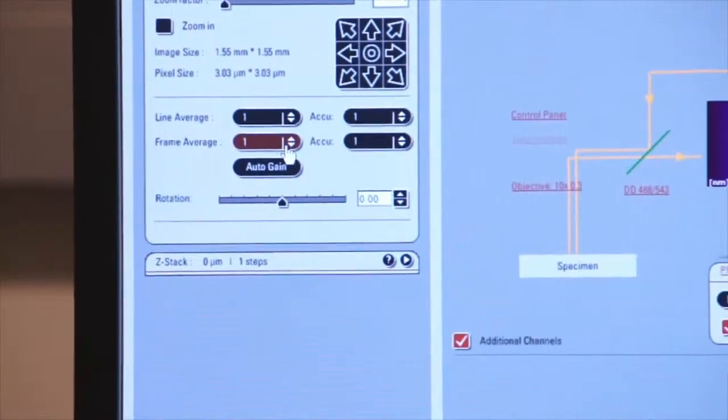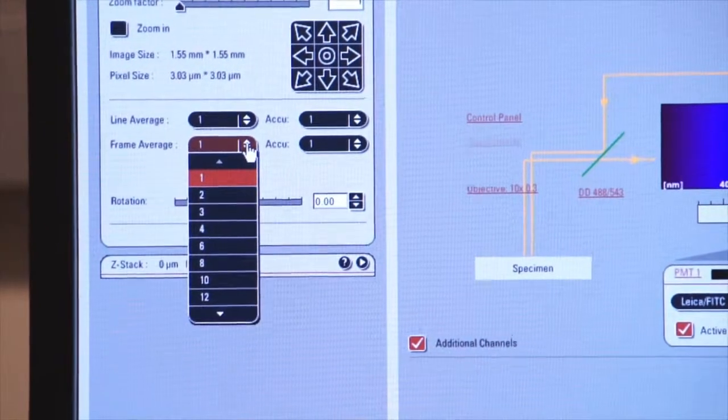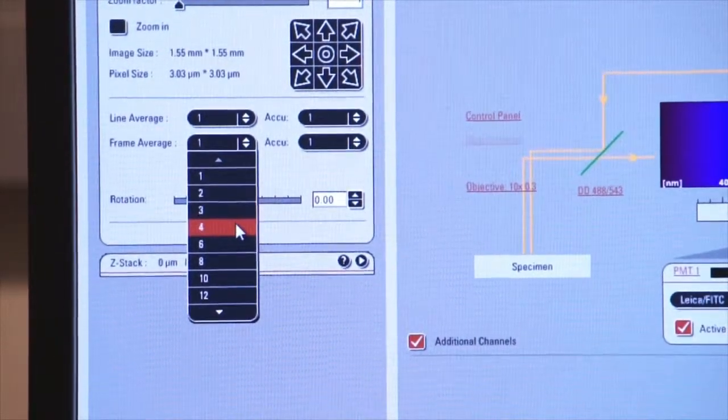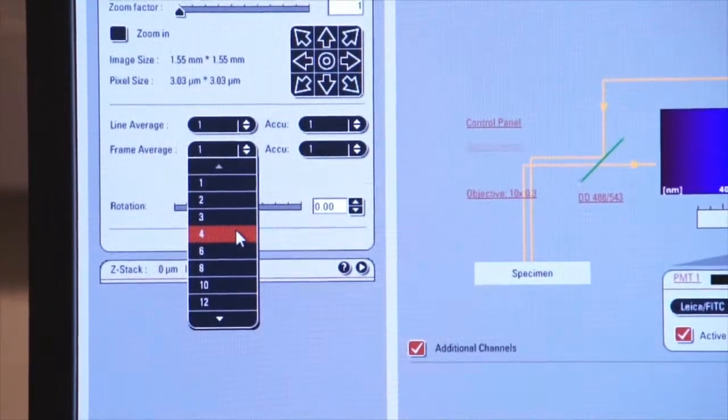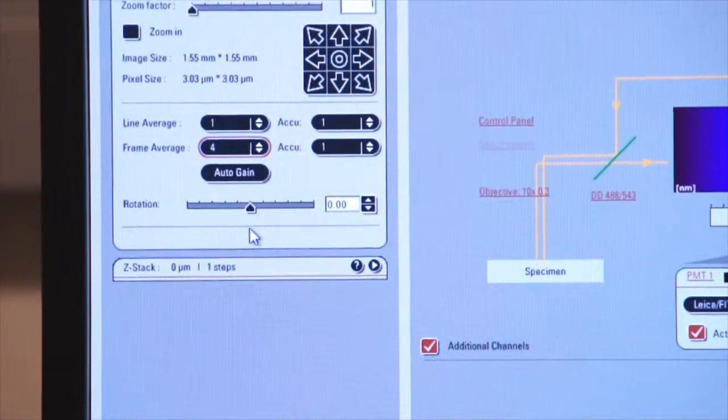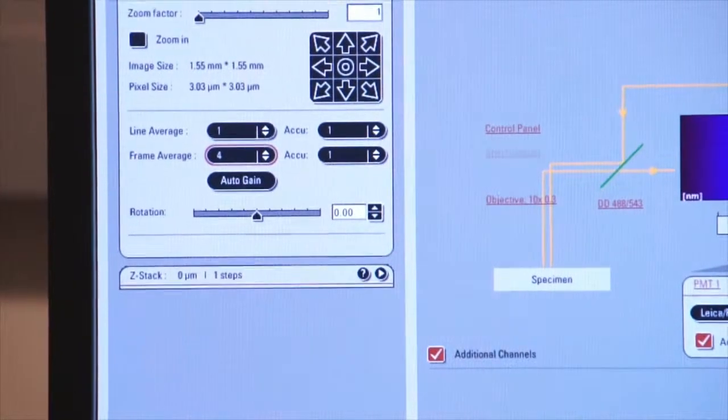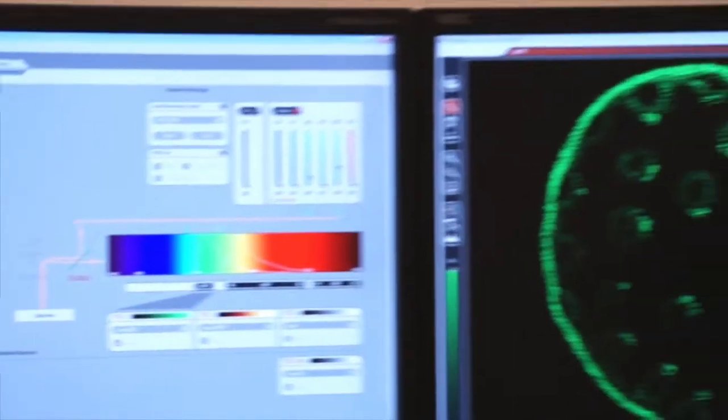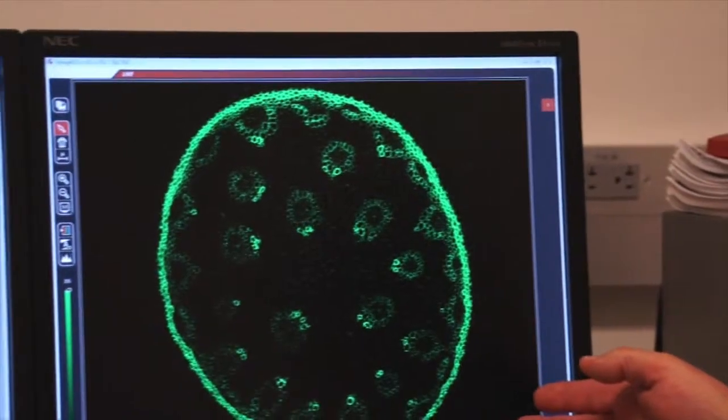And now we'll try a frame average. You can also average the number of frames that you take per picture. So we'll do four frame averages and if I click on capture image, I've told the system to take an image, but do four different frames.